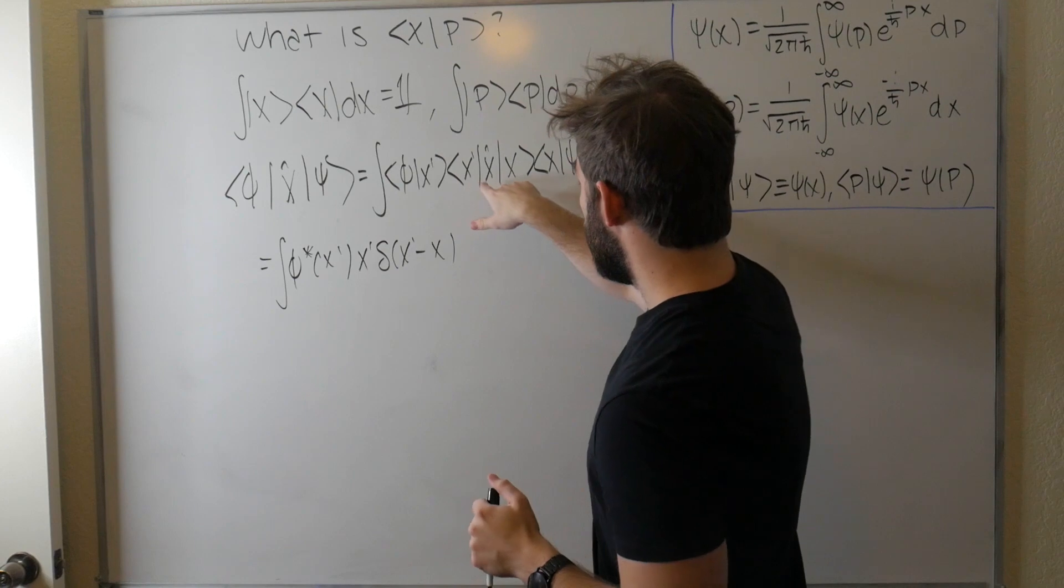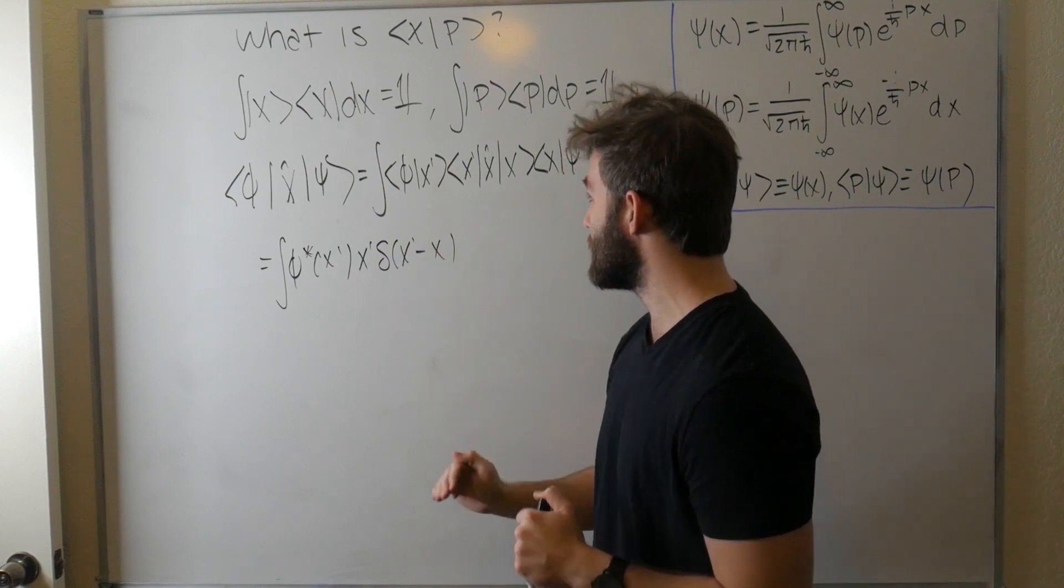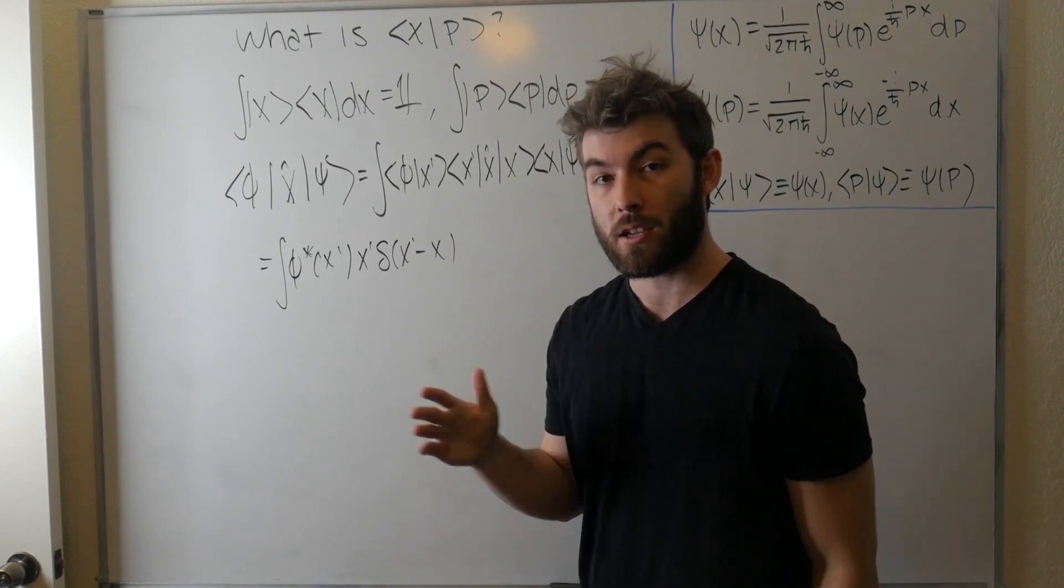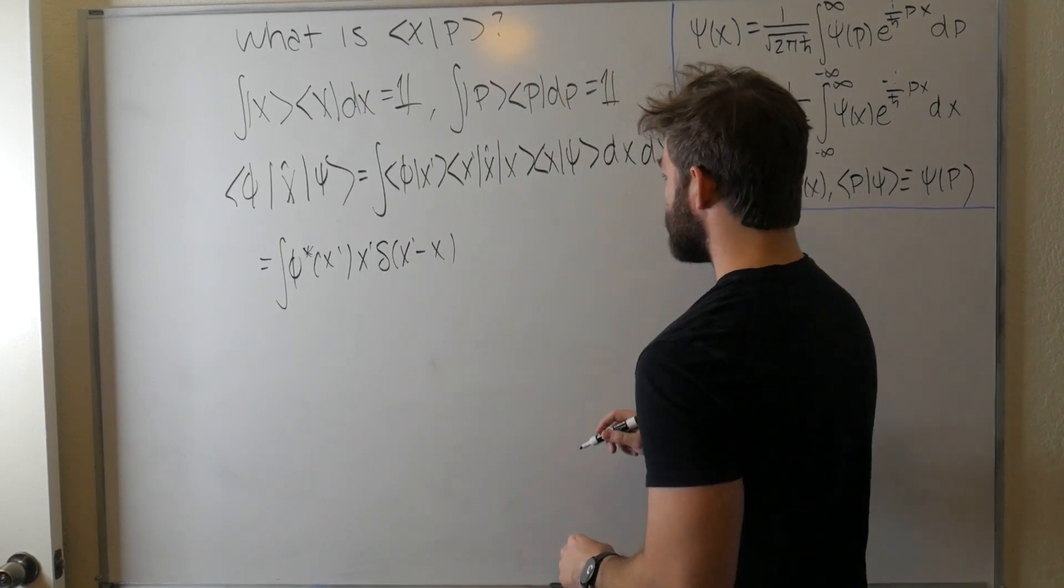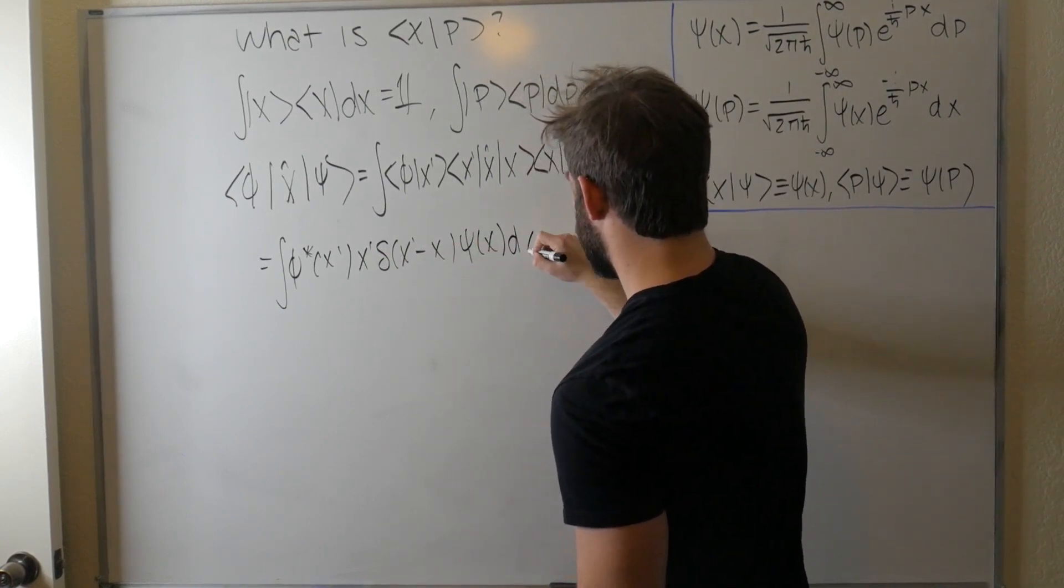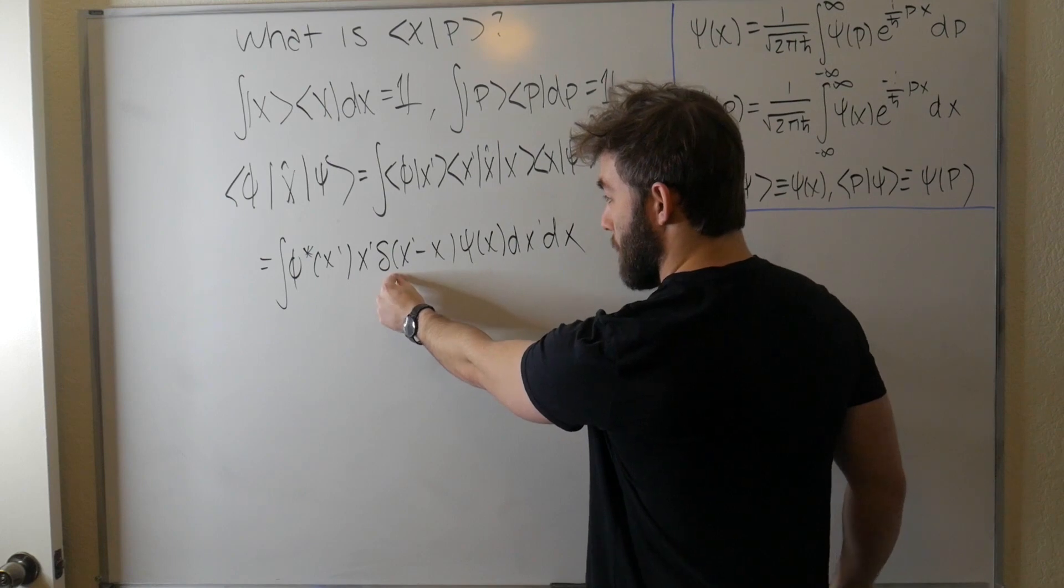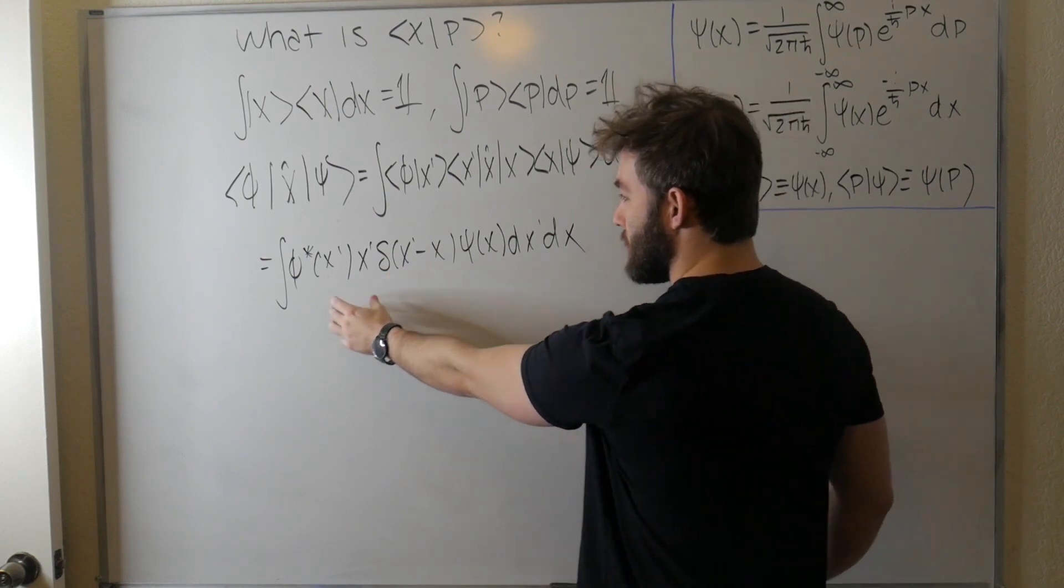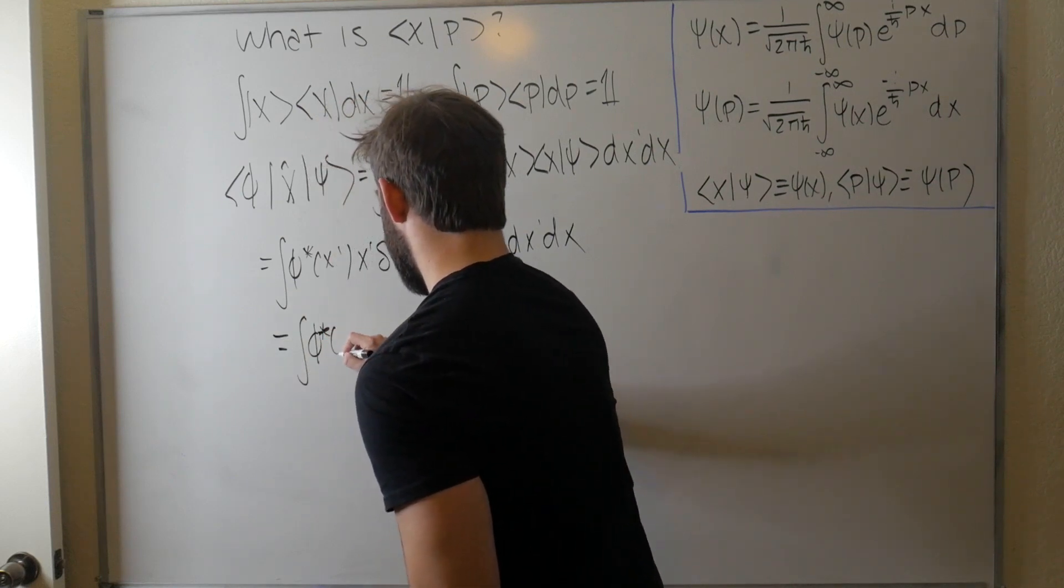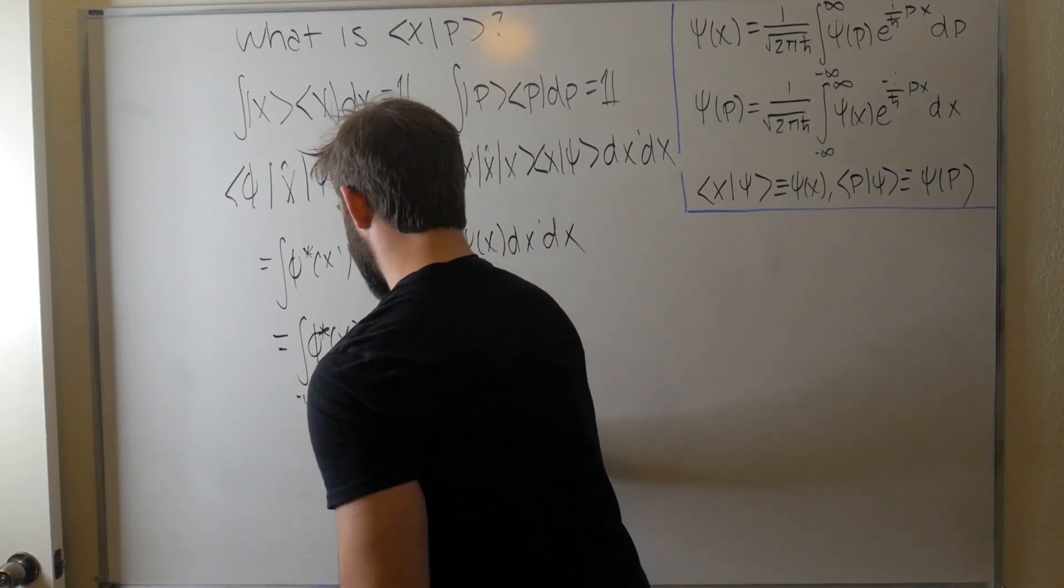Why is it a delta function instead of the Kronecker delta? Well, this operator and these ket vectors are continuous. So since they're continuous, it's not discretized entries in the vector or these matrices, which means that we can't just have a discrete Kronecker delta. We need something continuous. Kronecker delta becomes a delta function. Okay, so now we've got this and we've got psi of x. We've got our dx prime dx. Our dx prime integral, well, this delta function is going to pick out the value for x prime equal to x. So all of these x primes just become x's. Okay, so we've got psi star of x, x psi x dx.